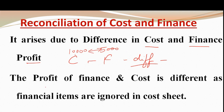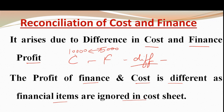उसी की वजह से reconciliation statement बनाया जाता है और reconcile किया जाता है। The profit of finance and the profit of cost is different because financial items are ignored in cost sheet। जब हम cost sheet solve करते हैं तब हमारे financial items इसमें से ignore होते हैं — that is why reconciliation statement में finance के profit और cost के profit को reconcile किया जाता है।